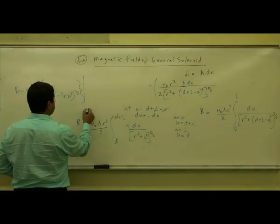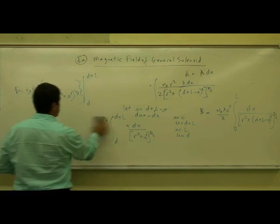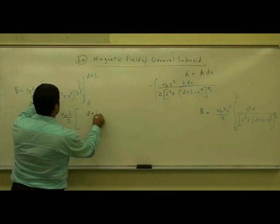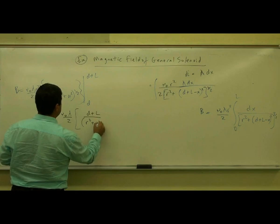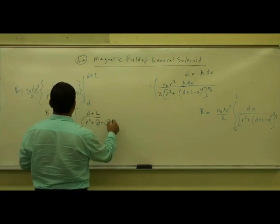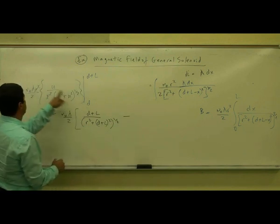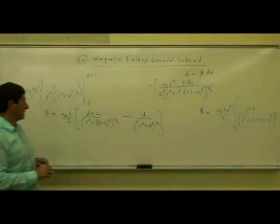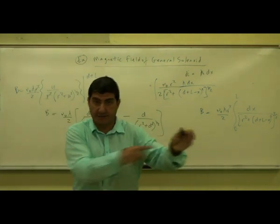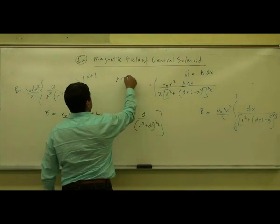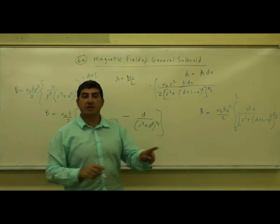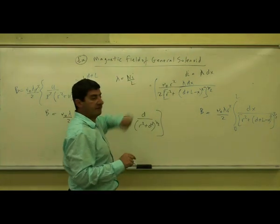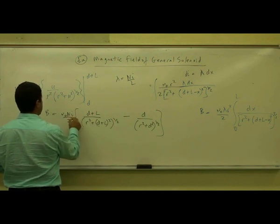Evaluating from D to D plus L, r squared cancels, and B equals mu_0 lambda over 2, times [(D plus L) over (r squared plus (D plus L) squared) to the one-half, minus D over (r squared plus D squared) to the one-half]. Now, lambda is the total current divided by the length of the wire: lambda equals NI over L, where N is the number of loops and I is the current in each loop.